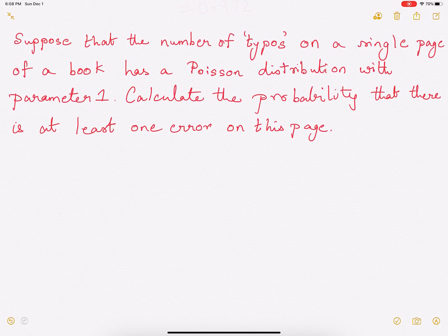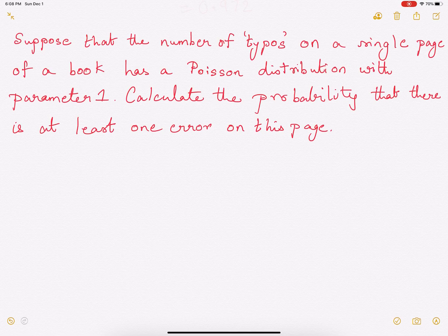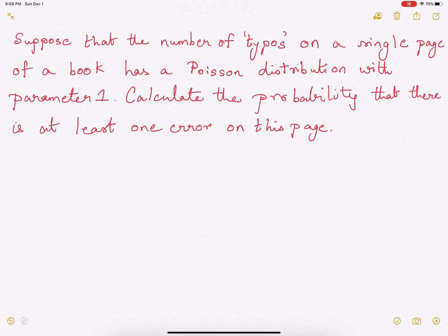Now what we need to find out is the probability that there is at least one error on this page. So how do we go about solving this problem?